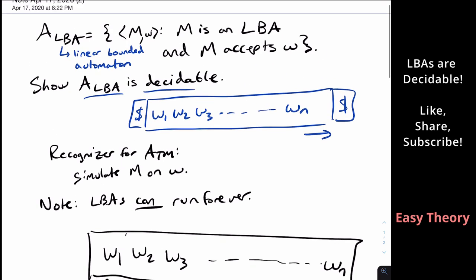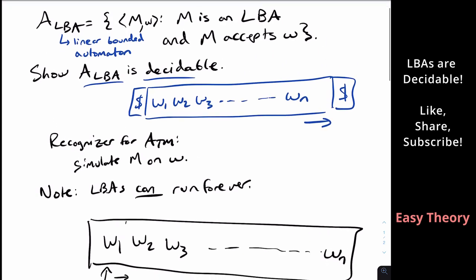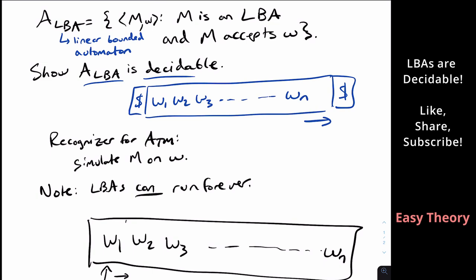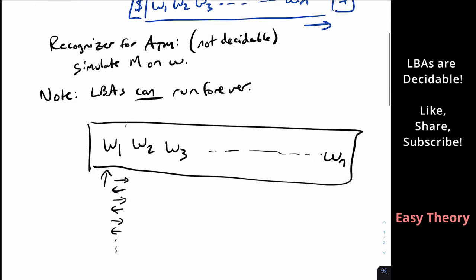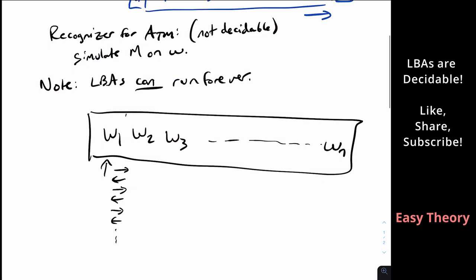So how is it that A_LBA is decidable, whereas ATM is not decidable? So let's remember that this is not decidable. So what could we do here? Well, let's see.